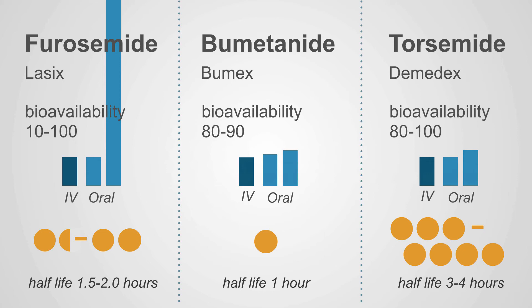They vary primarily from Lasix in terms of bioavailability — essentially the ratio of an IV dose to what you need orally. With Lasix, if you give a certain amount IV, you may need the equivalent or much more orally, and it's hard to predict in any individual patient. The bioavailability of bumetanide and torsemide is much more predictable — the low dose to high dose range is almost identical to the IV dose — making it much easier to convert patients from IV to oral bumetanide and torsemide.